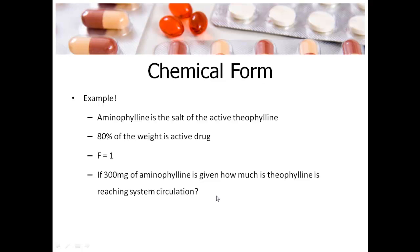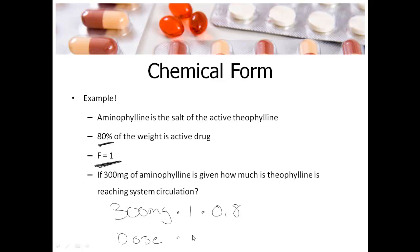Let's do an example. Aminophylline is the salt of the active drug theophylline, and 80% of its weight is active drug. It has a bioavailability of 1, and 300 milligrams of aminophylline is given — how much theophylline reaches systemic circulation? We take 300 milligrams times 1 (bioavailability) times 0.8 (the salt fraction S), and that gives us 240 milligrams of theophylline.